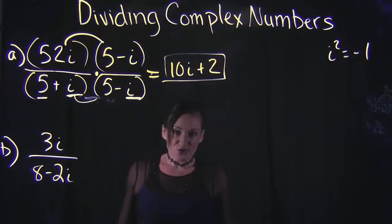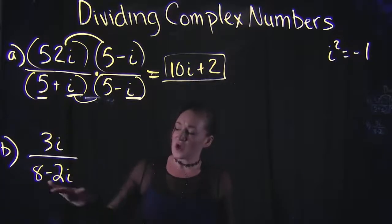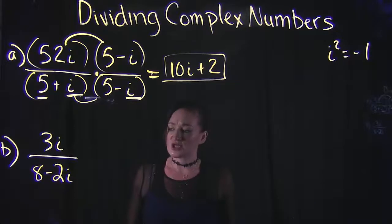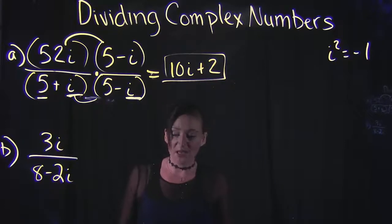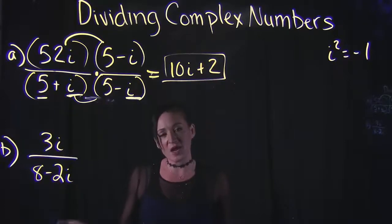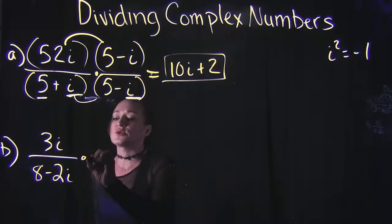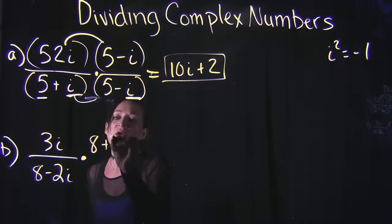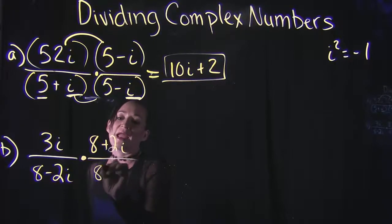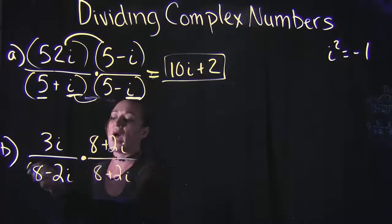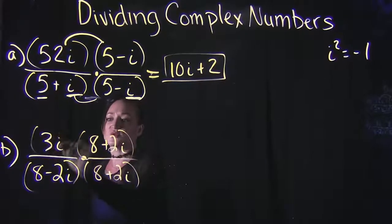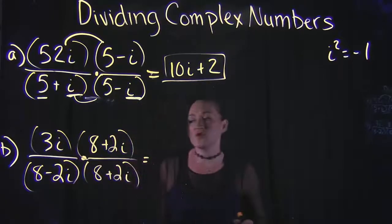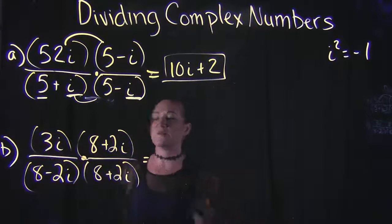For Example B, we focus on the denominator which is 8 minus 2i. The conjugate of that is 8 plus 2i — same thing, just change the sign. So we're going to multiply both the numerator and the denominator by 8 plus 2i. The numerator here is a monomial times a binomial, so we distribute.